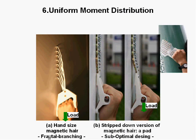A is a hand-size magnetic hair. B is a pad, a prototype which is basically a stripped-down version of a magnetic hair where we trade off compliance for manufacturing cost. We can understand better the importance of uniform load distribution if we compare a gecko branching structure with a suboptimal design such as B.